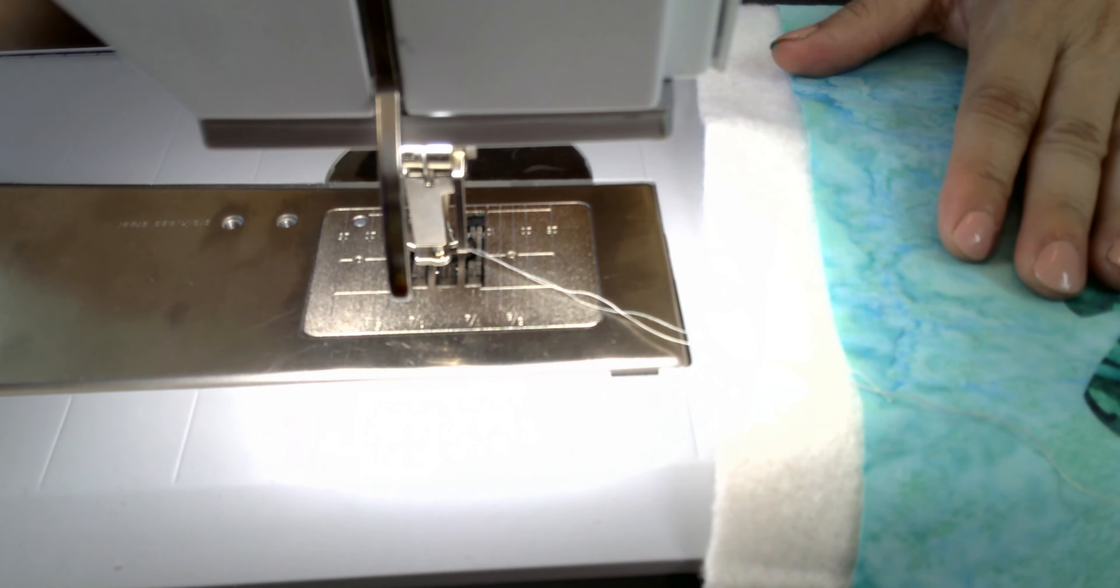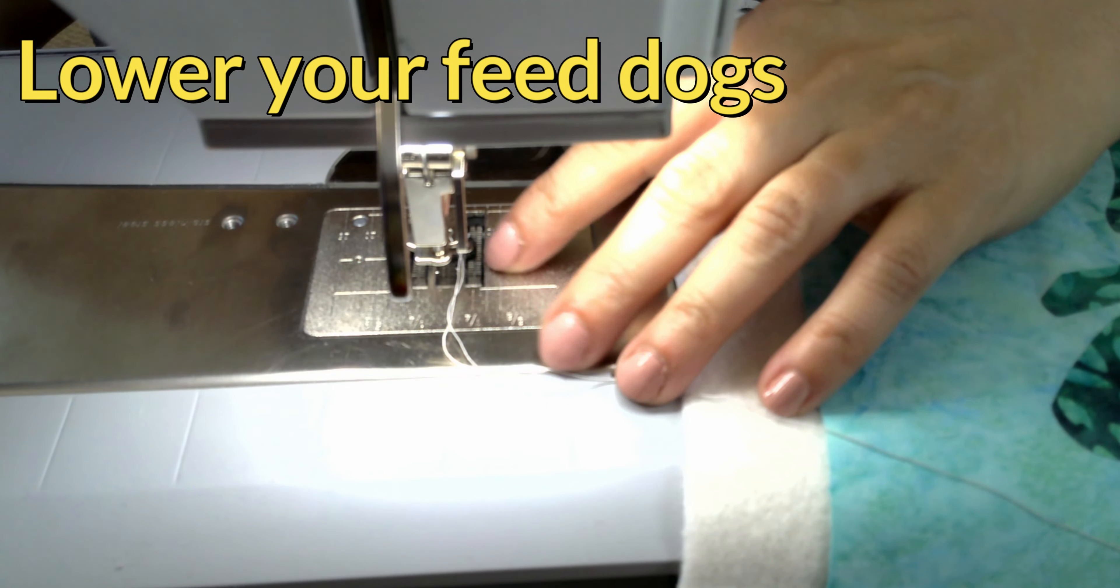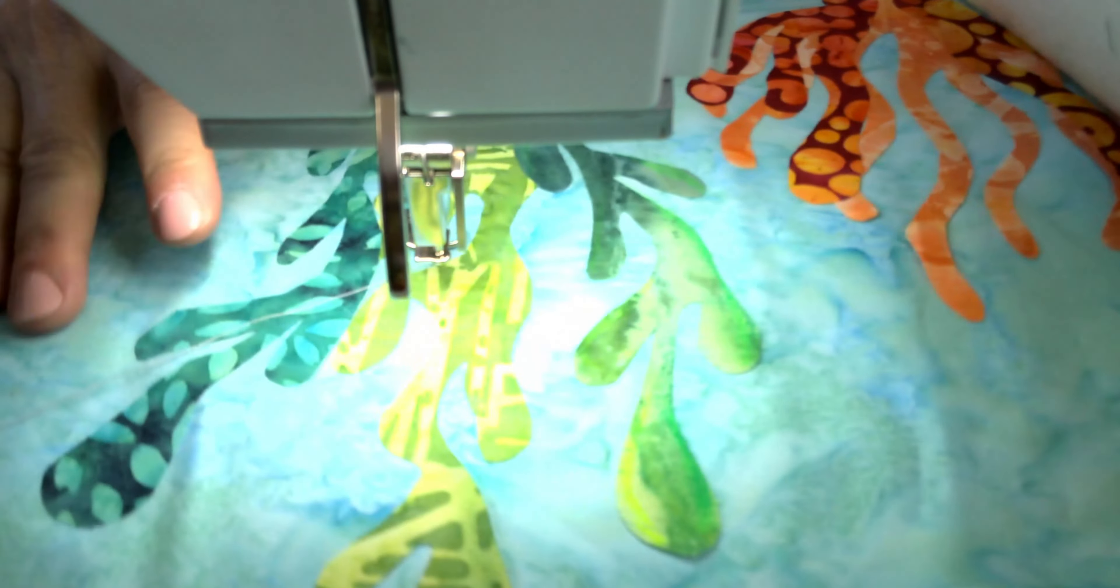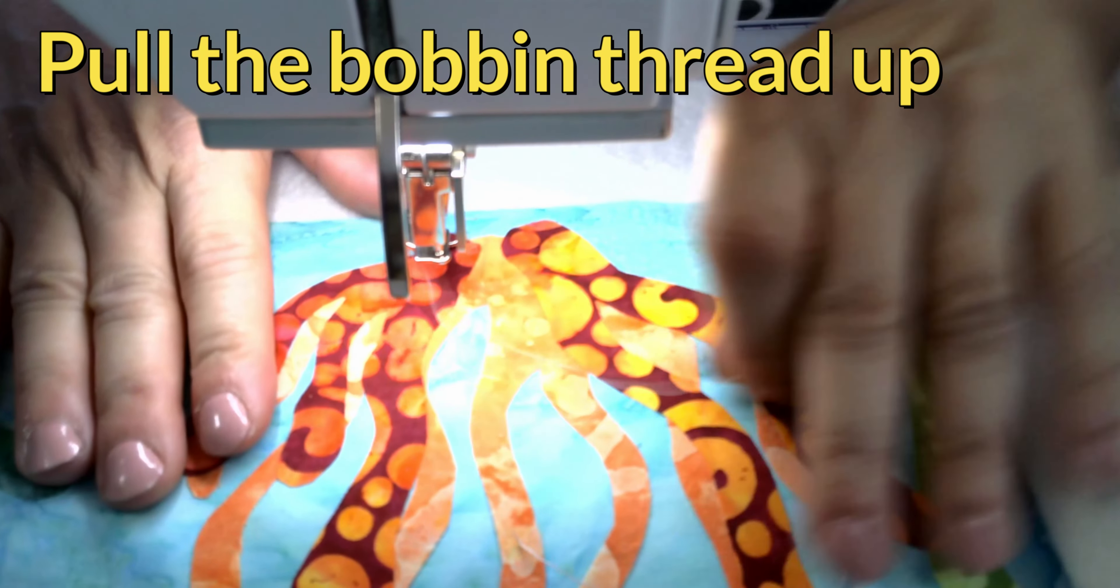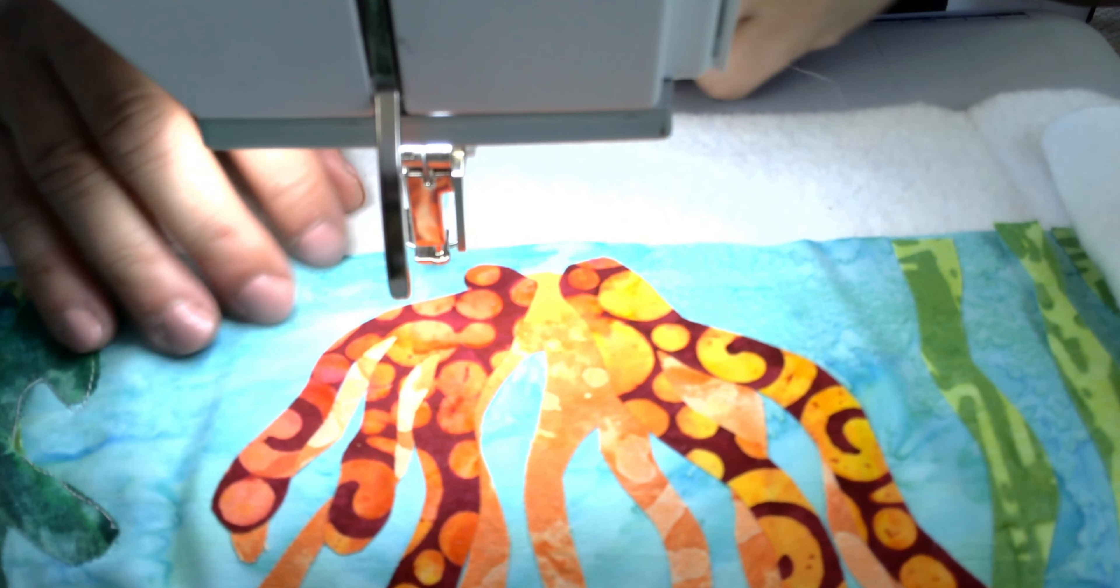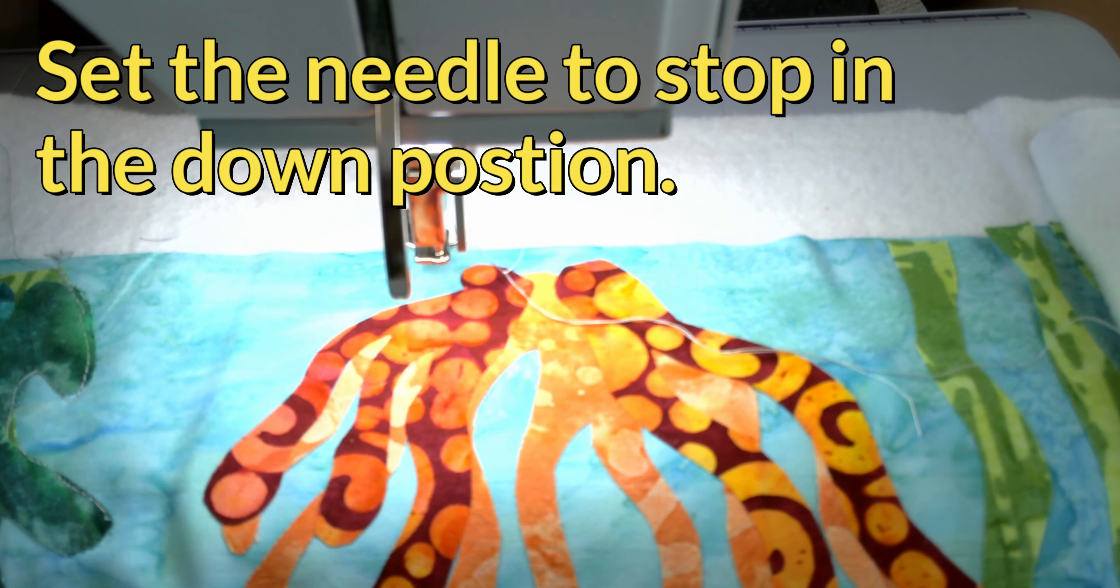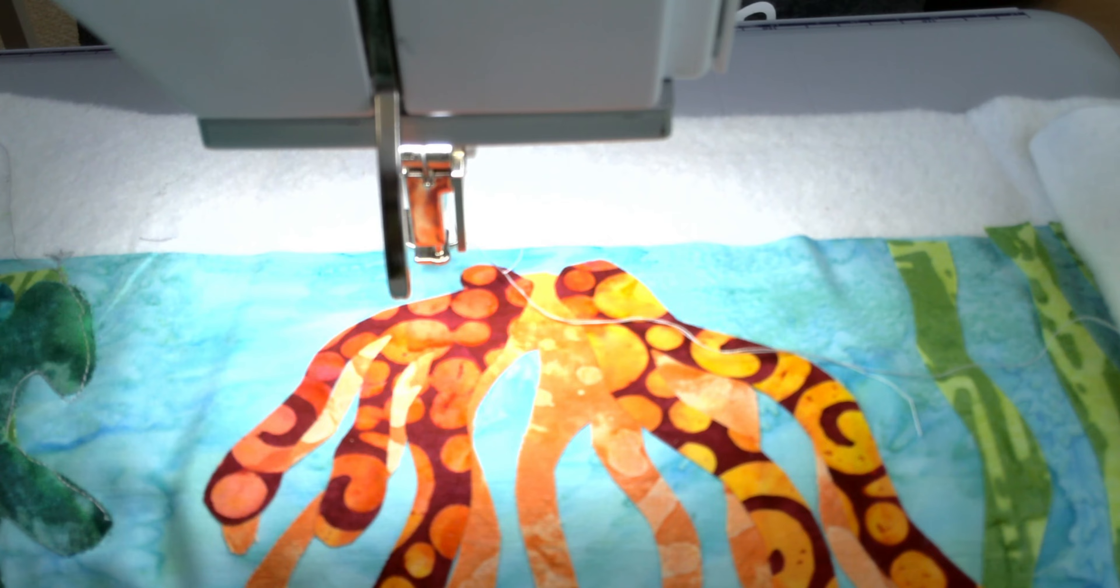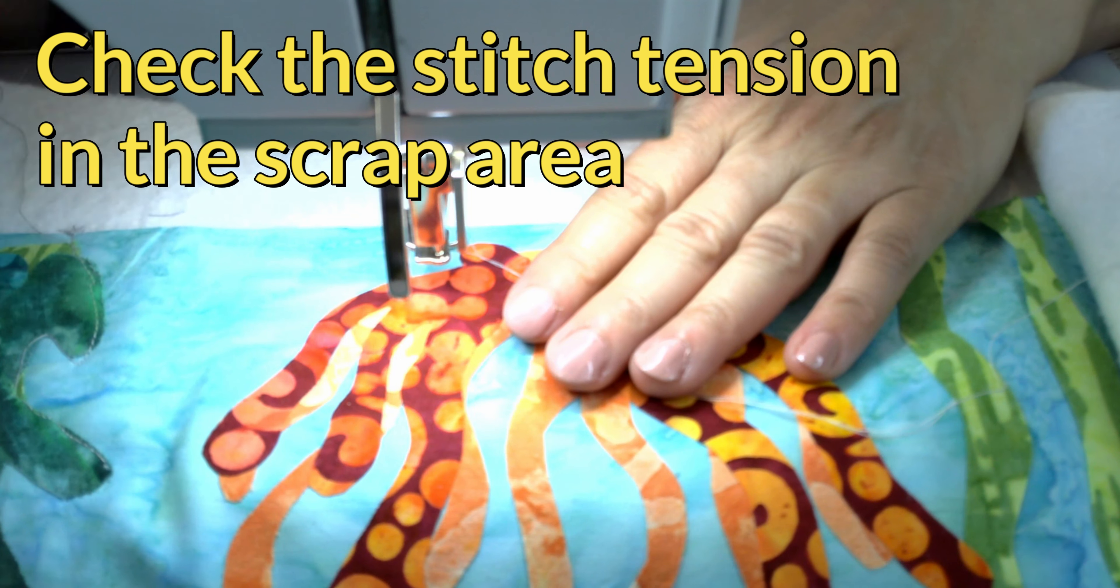Okay, before you begin any free motion project, lower your feed dogs and check that you have sufficient bobbin thread. Then you will pull your bobbin thread up through both pieces of material so that the top thread and the bottom thread end up on the top of the project. Set the needle into the down position and then you are ready to check the tension. I always check my tension in the little scrap area outside of the quilting area.